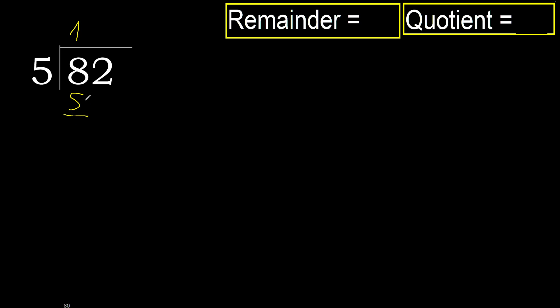8 minus 5 equals 3. Next, bring down: 32. 5 multiplied by 7 is greater, so multiplied by 6 is 30 — 30 is not greater.